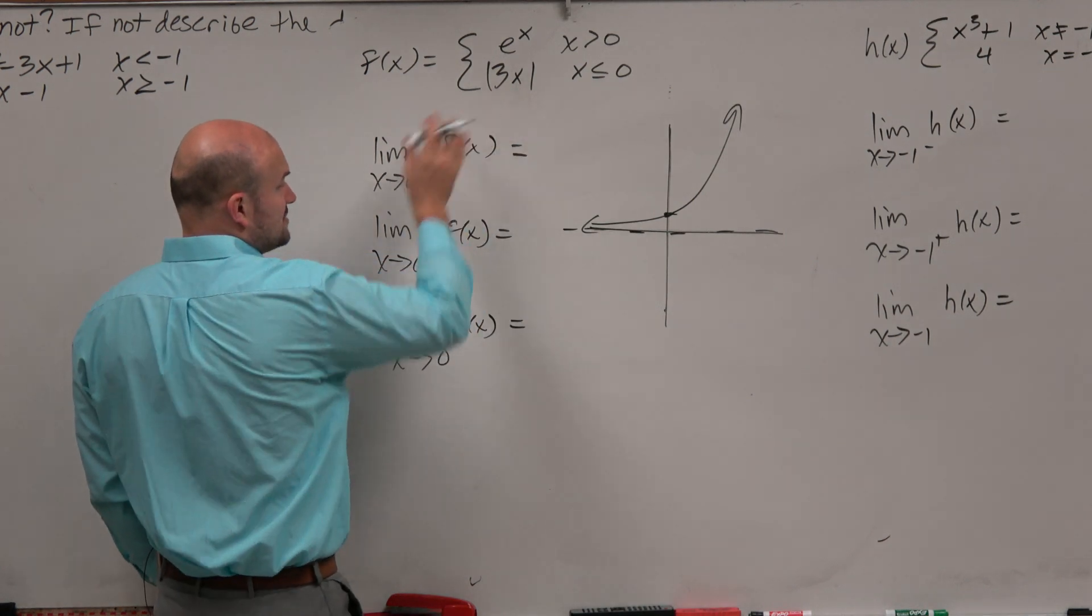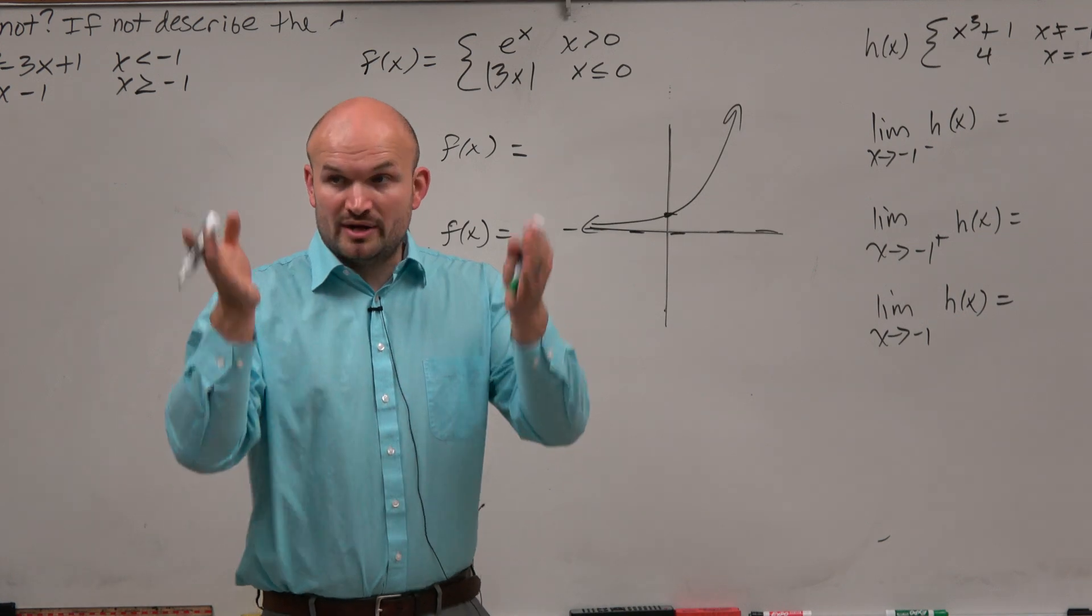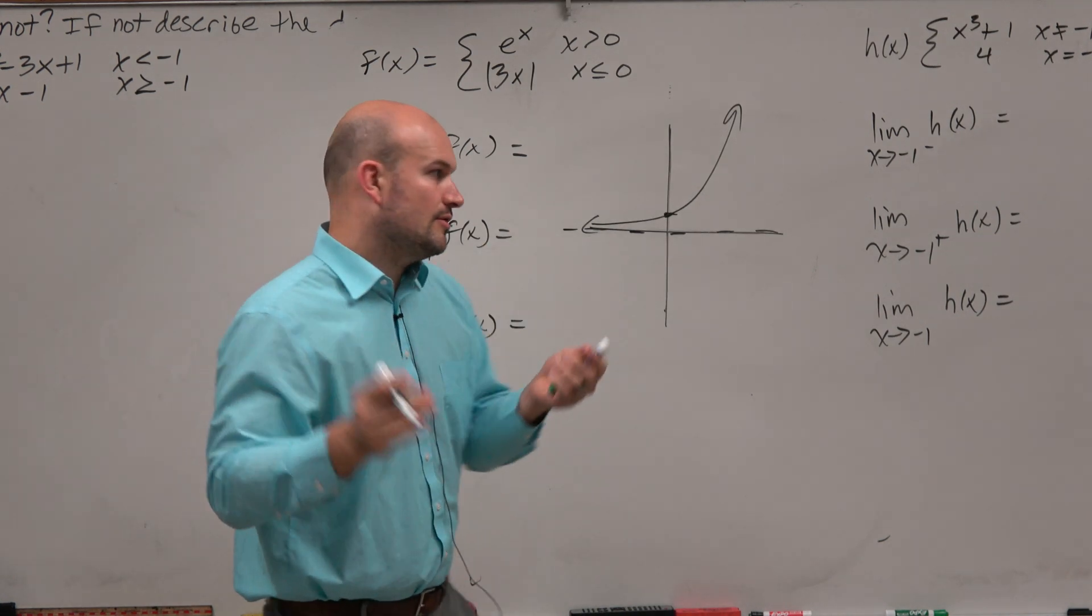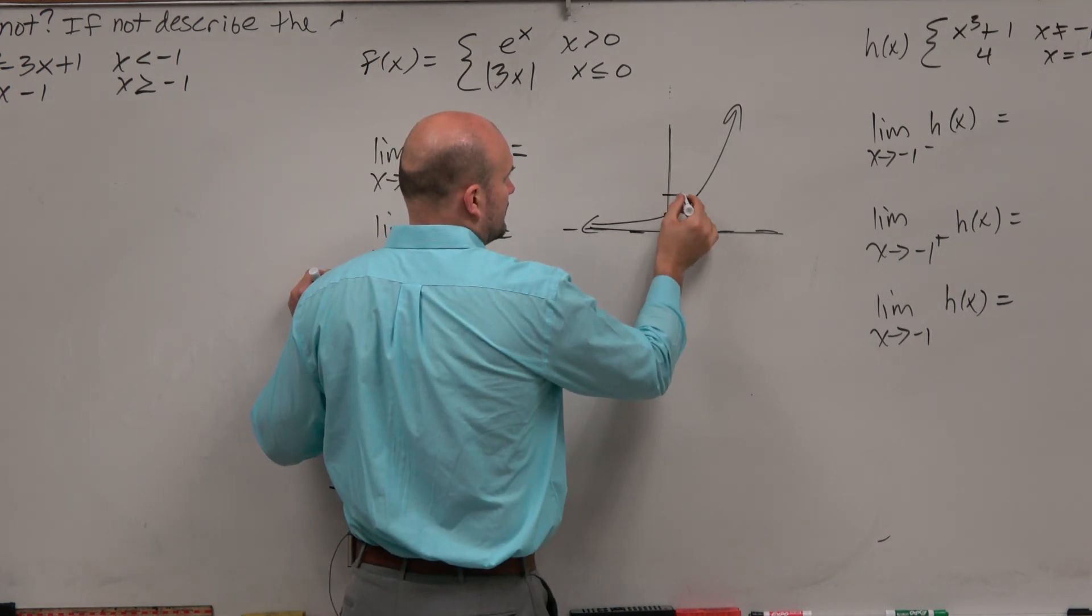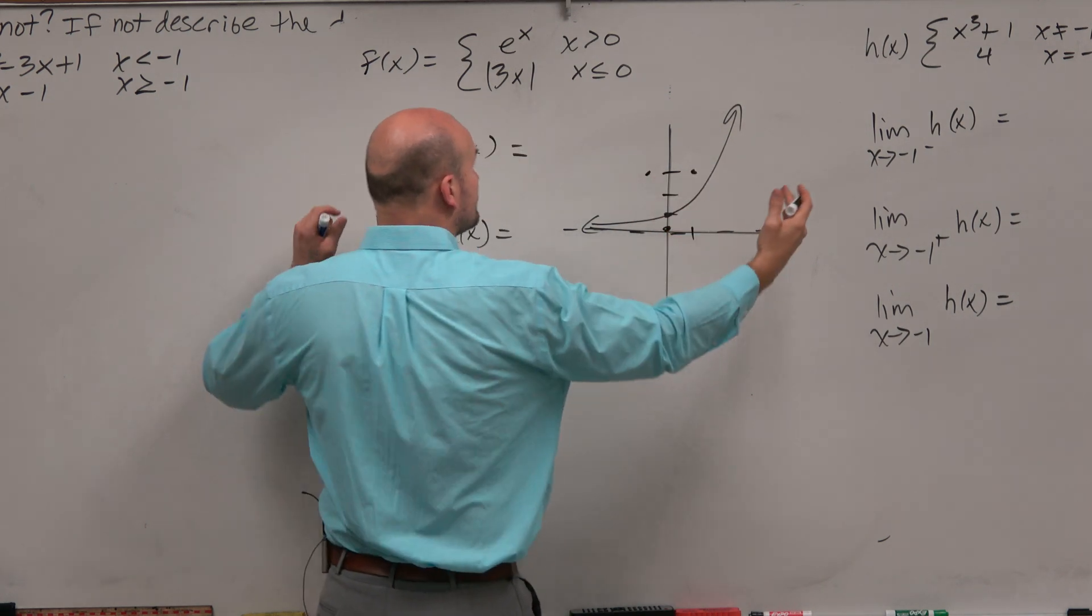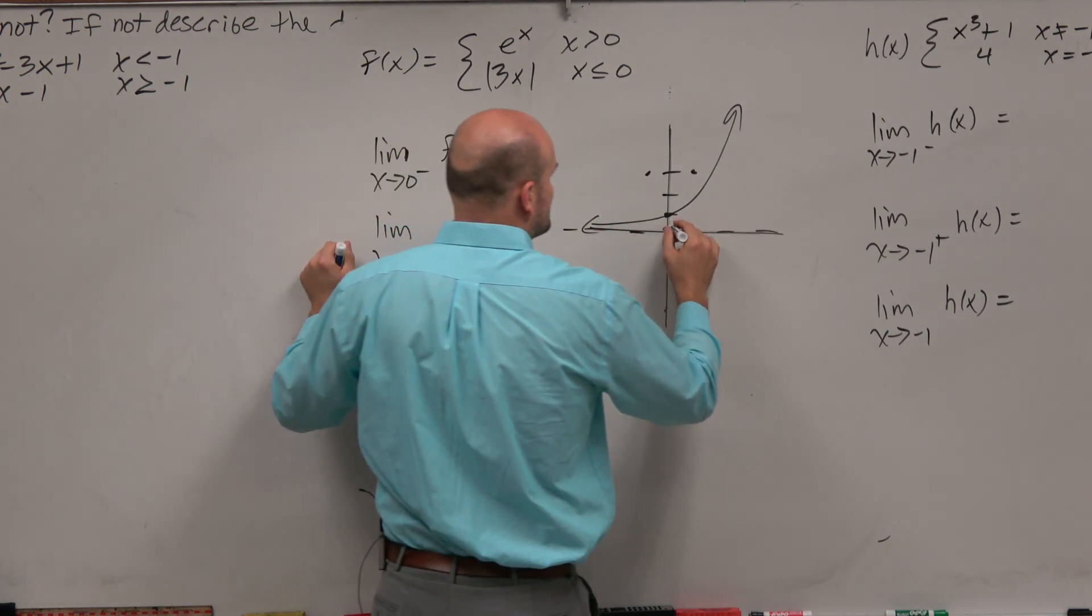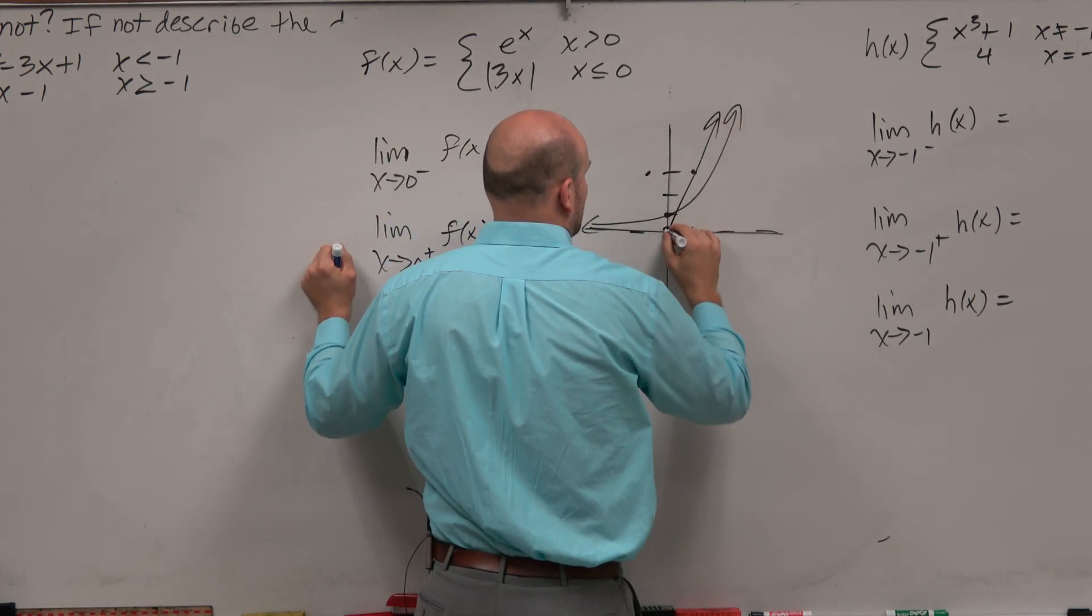And then we have the absolute value of 3x. Remember, it's the v-shape graph. However, the slope is 3. So instead of going over 1 up 1, we're going to go over 1 up 3. So it's going to be very, the 3 is on the inside, so it's actually horizontally being compressed. So the graph looks something like that.